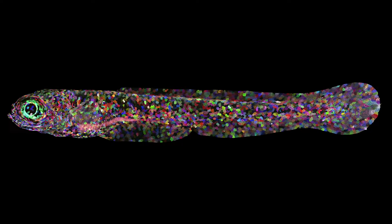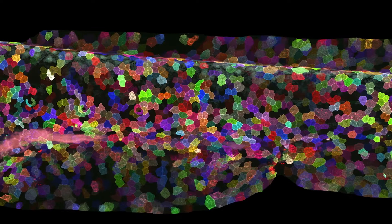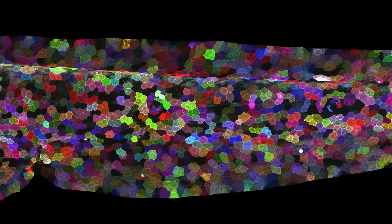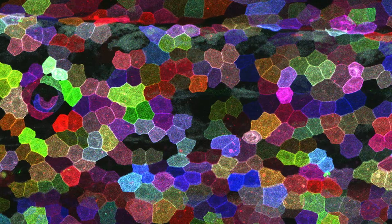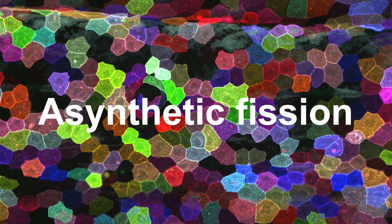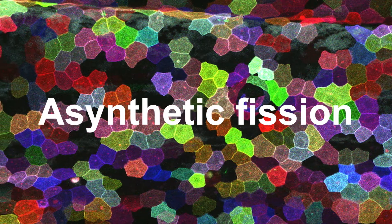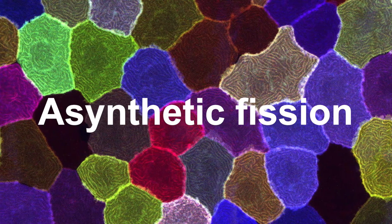This is a zebrafish that has been genetically modified to make each cell fluoresce a different color. The model was used by a team of Taiwanese researchers to discover a new type of cell division, where the cells divide without replicating their genome. This newly discovered type of cell division is called asynthetic fission. In this video I will outline how it is possible to genetically modify any organism and make each cell fluoresce a different color, and also outline the discovery of asynthetic fission.